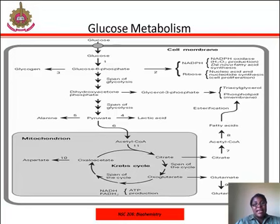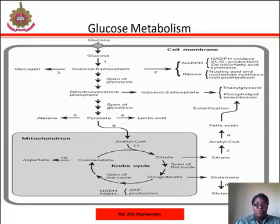NADPH stands for nicotinamide adenine dinucleotide phosphate. The stored energy in ATP and NADPH is then used later in photosynthesis to build one molecule of glucose from six molecules of CO2. The amount of energy needed to make one molecule of glucose from six molecules of carbon dioxide is 18 molecules of ATP and 12 molecules of NADPH.